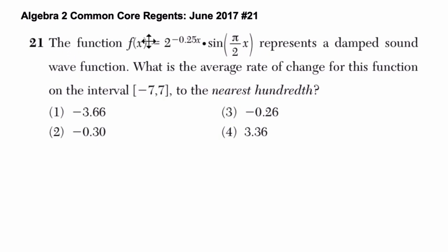Okay, so they give us a function f of x, and they give us this interesting looking function where the amplitude or the number multiplied by sine is an interesting exponential function, and then we have a sine function here multiplied. And it's the damped sound wave function. So it's a sine function where sound is damped, right?